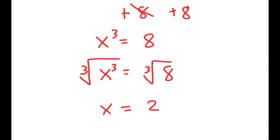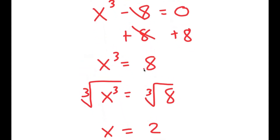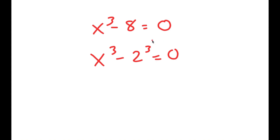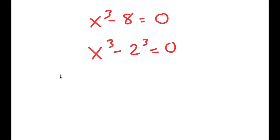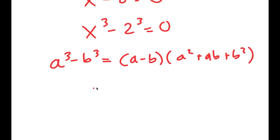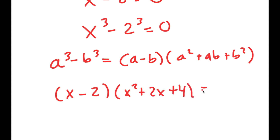But actually there are more than one solution to this equation. I'm going to rewrite x cubed minus 8 equals 0, rewriting 8 as 2 to the power of 3, so I get x cubed minus 2 cubed equals 0. Using the formula a cubed minus b cubed equals a minus b times a squared plus ab plus b squared, this turns into x minus 2 times x squared plus 2x plus 4 equals 0.